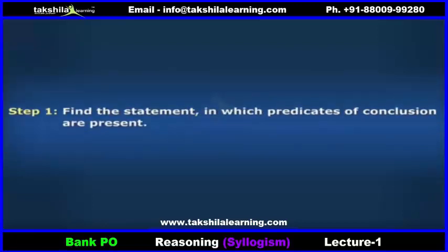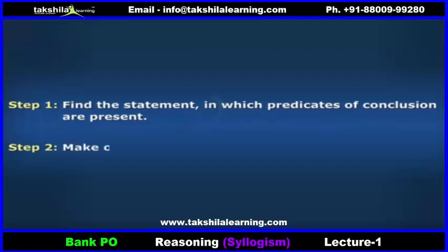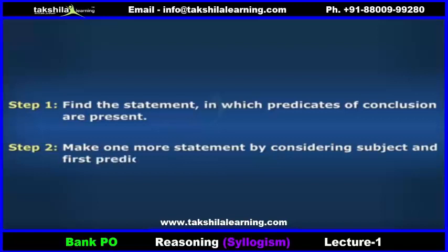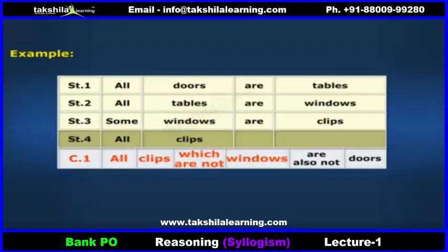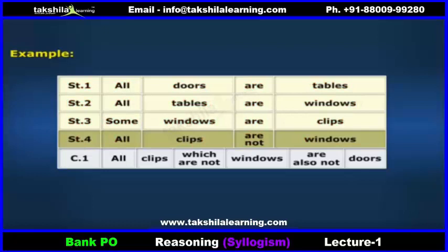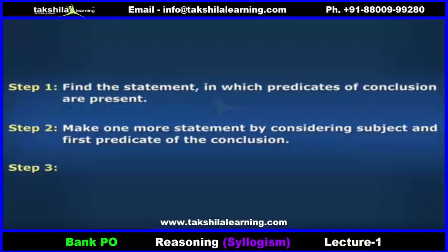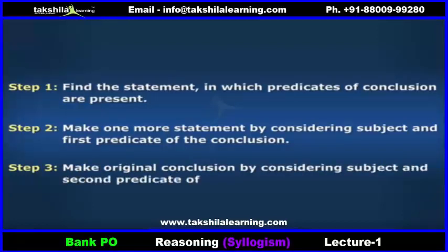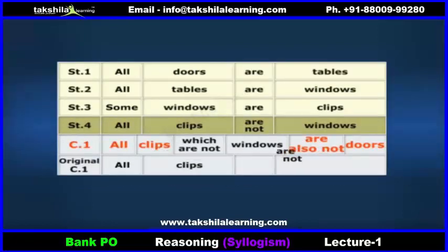Then in Step 2, make one more statement by considering the subject and first predicate of the conclusion. Like here, it will be: all clips are not windows. Now Vidya, you have four statements — three given and one formed. Coming to Step 3 now: make the original conclusion by considering the subject and second predicate of the conclusion. Like: all clips are not doors.